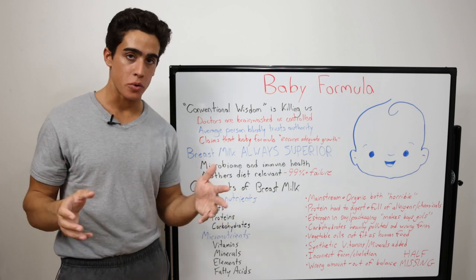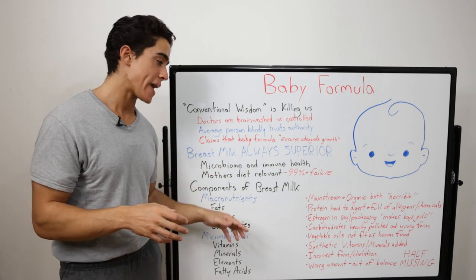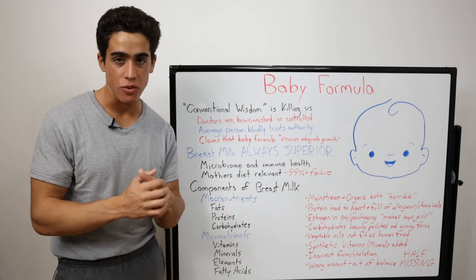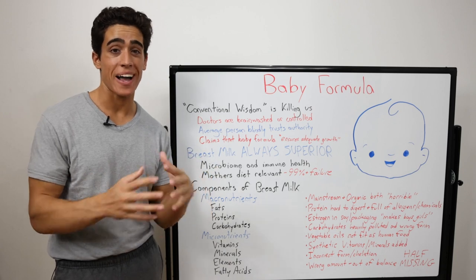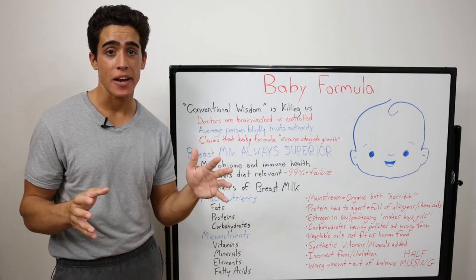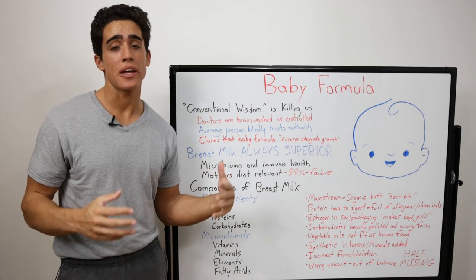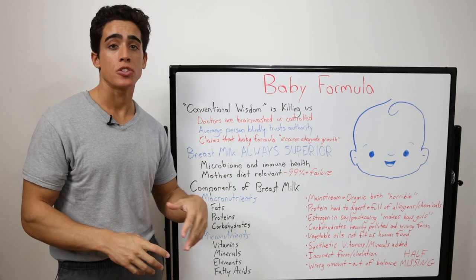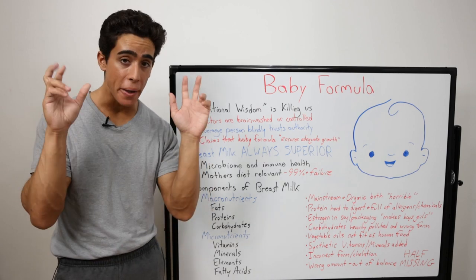Now, at least in the whey protein formula, there's naturally occurring animal-based B vitamins, minerals that are highly available. The soy protein, on the other hand, doesn't have that. And that's relevant to the synthetic laboratory-made vitamins and minerals they're adding to these macronutrient bases.